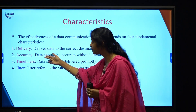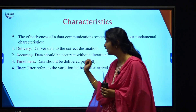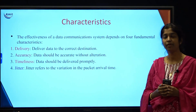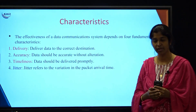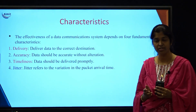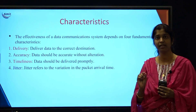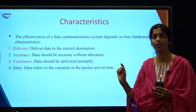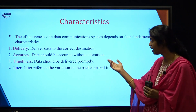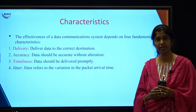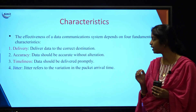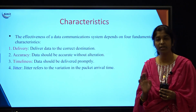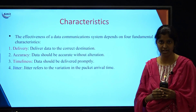We have delivery, accuracy, timeliness and jitter. The first characteristic is delivery. When we are doing data communication, we have to see to it that the data is being delivered to the correct destination — it does not go to the wrong device. The second is accuracy. Accuracy means whatever data we are sending has to be sent accurately, correctly, without any alteration or modifications.